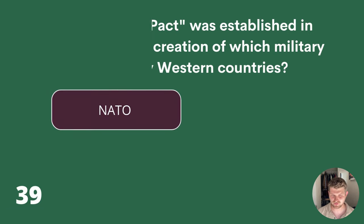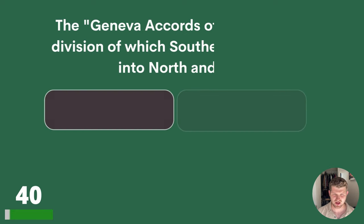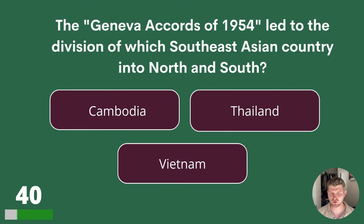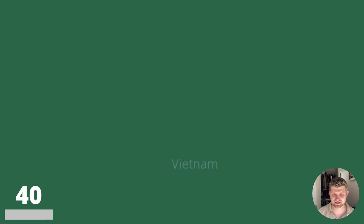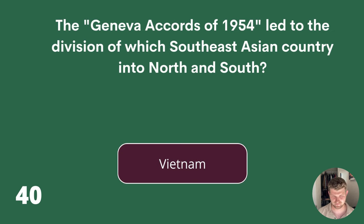Question 40. The Geneva Accords of 1954 led to the division of which Southeast Asian country into North and South? Cambodia, Thailand or Vietnam? The answer is Vietnam.